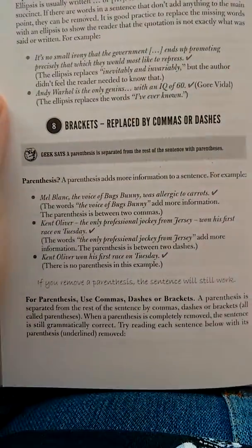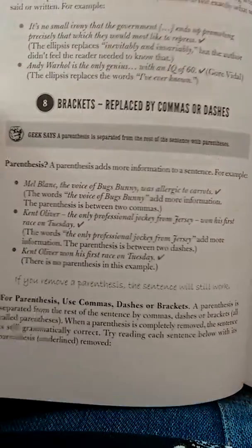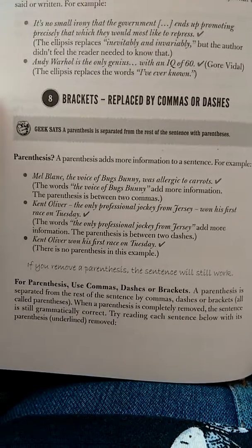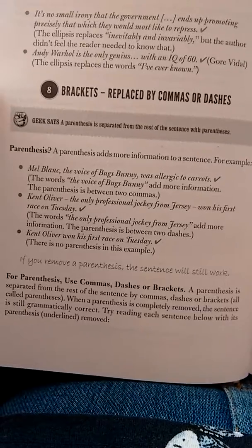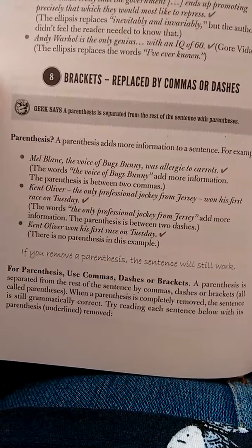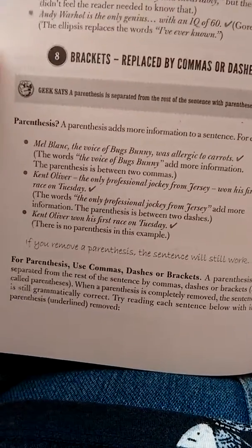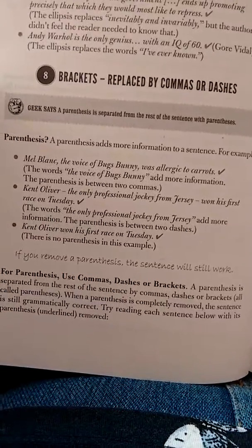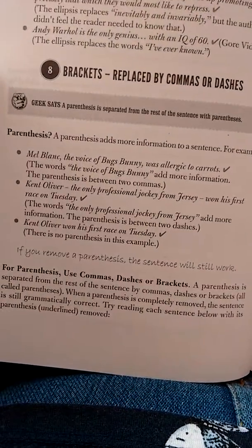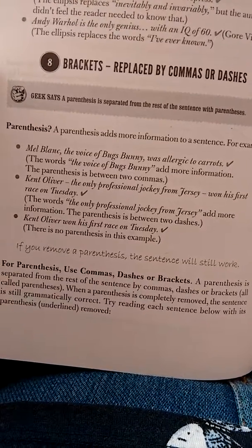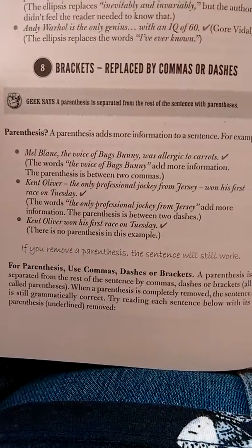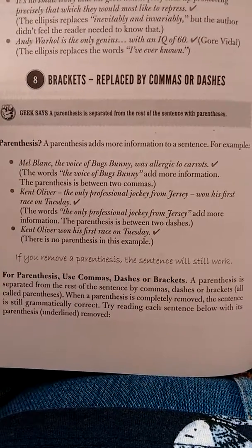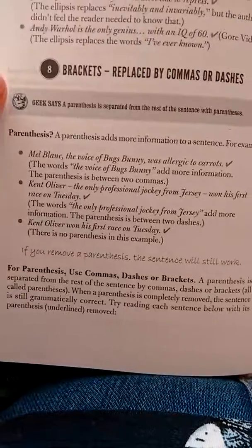Brackets replaced by commas or dashes. A parenthesis adds more information to a sentence and is separated from the rest of the sentence with parentheses — commas, dashes, or brackets. For example, 'Mel Blanc, the voice of Bugs Bunny, was allergic to carrots' — 'the voice of Bugs Bunny' adds more information and sits between two commas. Another example: 'Kent Oliver — the only professional jockey from Jersey — won his first race on Tuesday' — here the parenthesis is between two dashes. If you remove a parenthesis, the sentence will still work. When a parenthesis is completely removed, the sentence is still grammatically correct.